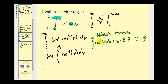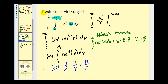Now we need to integrate 64cos⁴(y). Since the limits of integration are from 0 to π/2 and we have an even power of cosine, we can apply Wallace's formula: the integral of cosⁿ(y) from 0 to π/2, where n is even, equals (1/2)(3/4)…((n−1)/n)(π/2). For n = 4, we get 64 times (1/2)(3/4)(π/2). Simplifying, 2 × 4 × 2 = 16, and 64/16 = 4, leaving us with 4 × 3 × π = 12π. Wallace's formula saves us quite a bit of time compared to using power-reducing formulas.